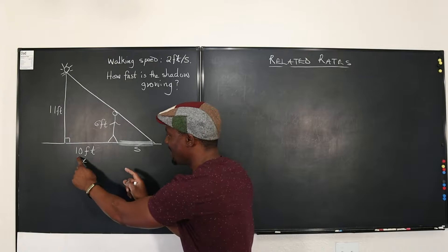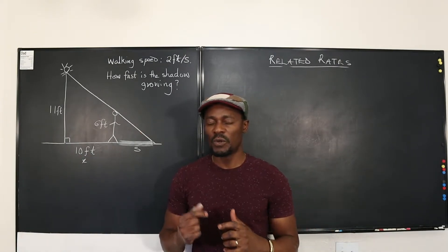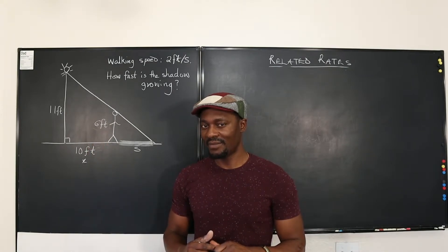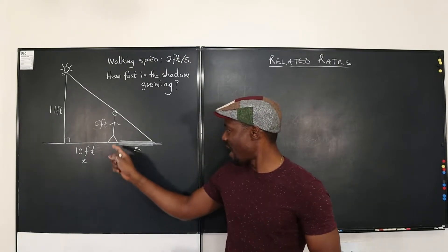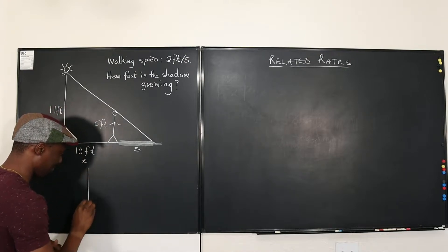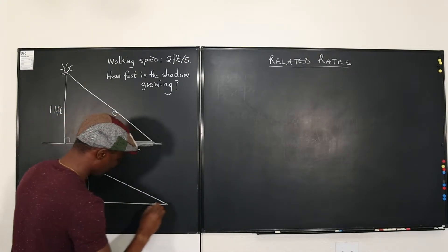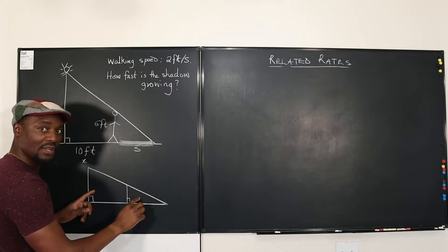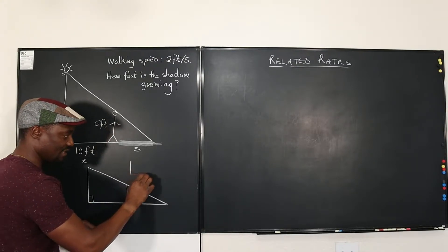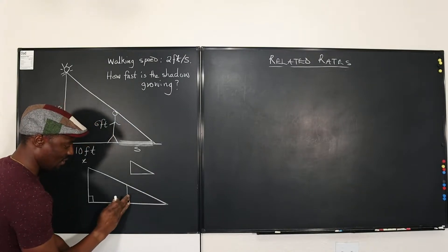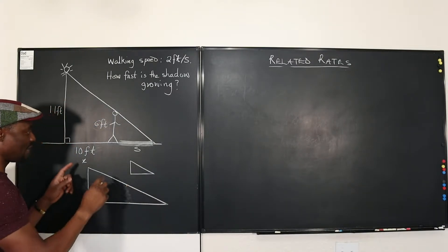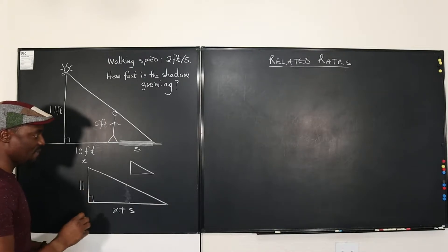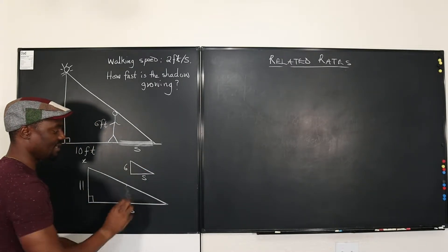So how can I connect this with this? Go back and ask yourself, what do I know? I know this is a right triangle. I know this is a right triangle and I have a line here like this. Then I can treat these two as similar triangles, where this is the big triangle and this is the small triangle. This is how I teach my students. So here we go. The big triangle is X plus S. X plus S. And this side is 11. The small triangle is just S and this is 6.